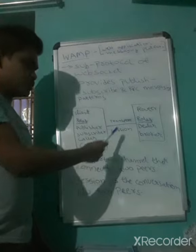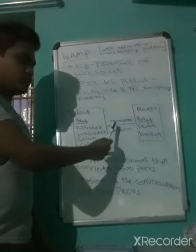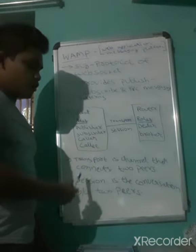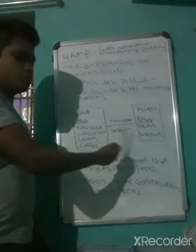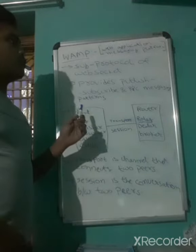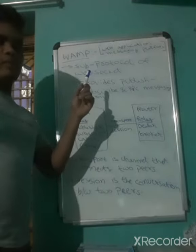Here are transport. Transport is the channel that connects two pairs. Here session — it is the communication between these two pairs. This is all about WAMP which means web application messaging platform.